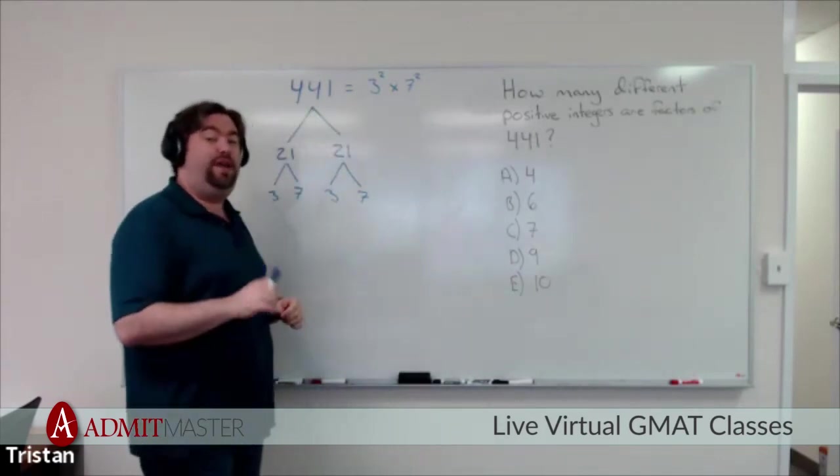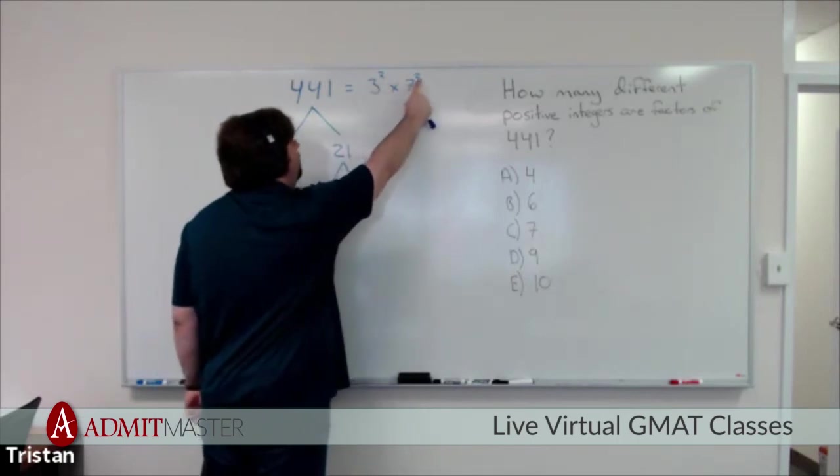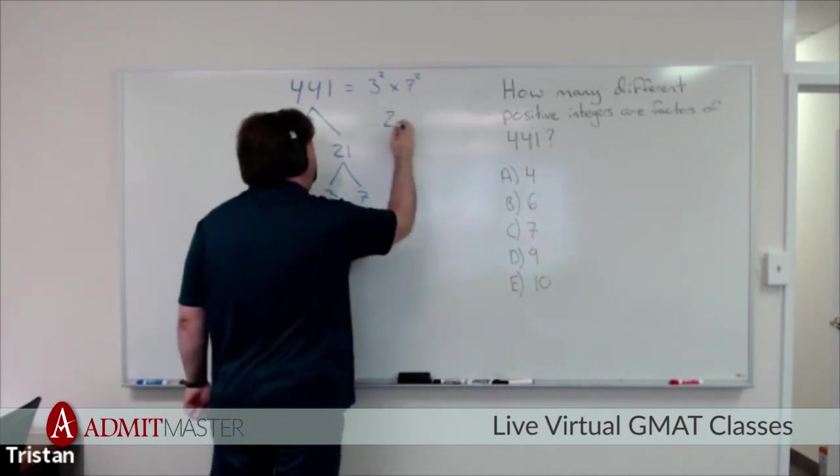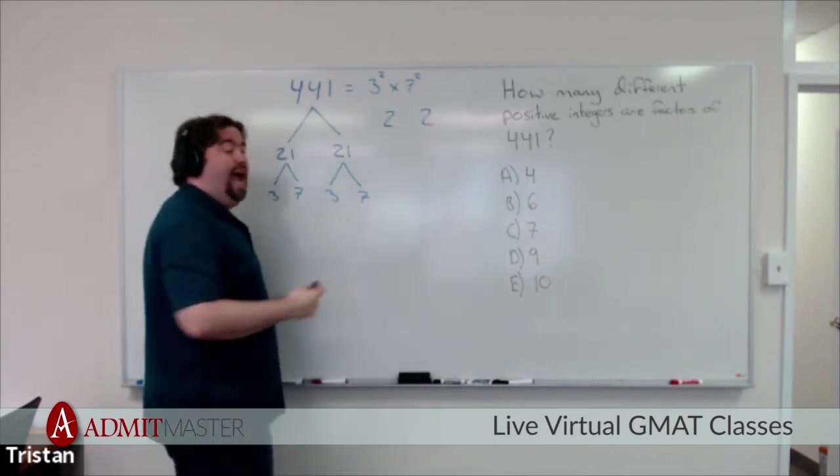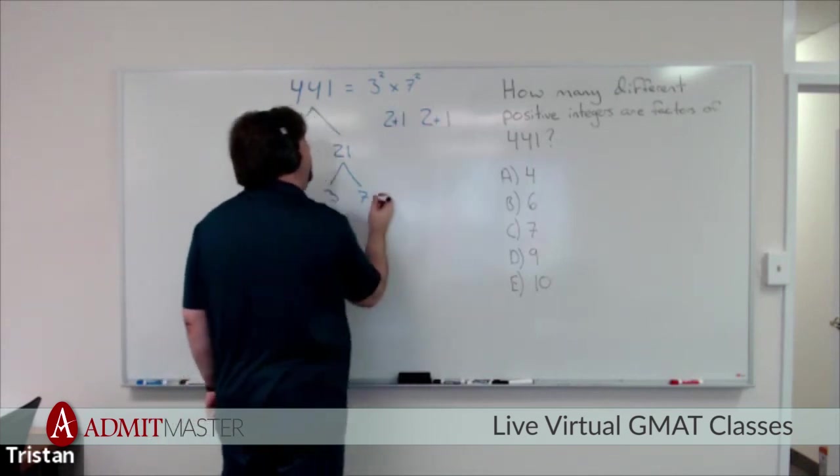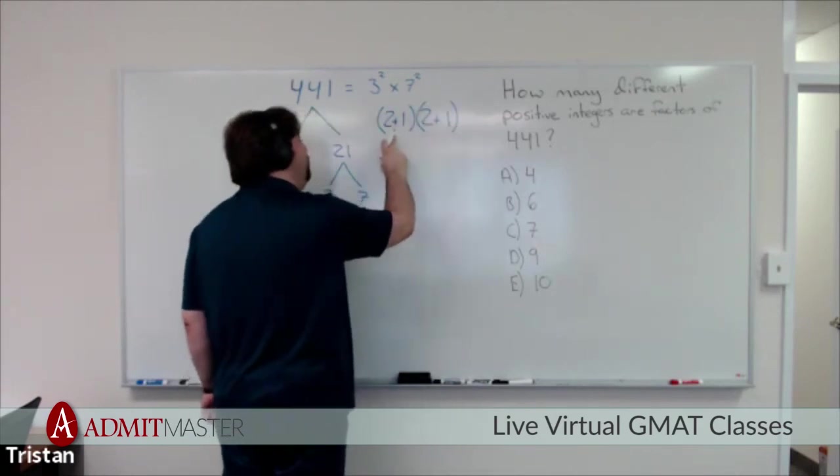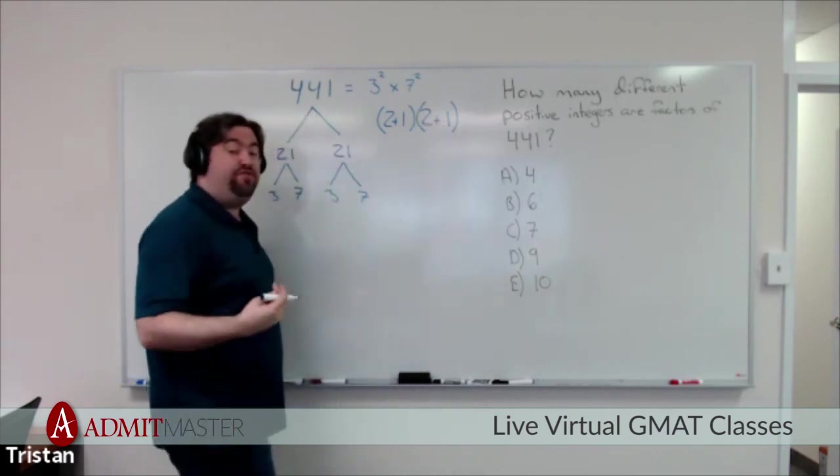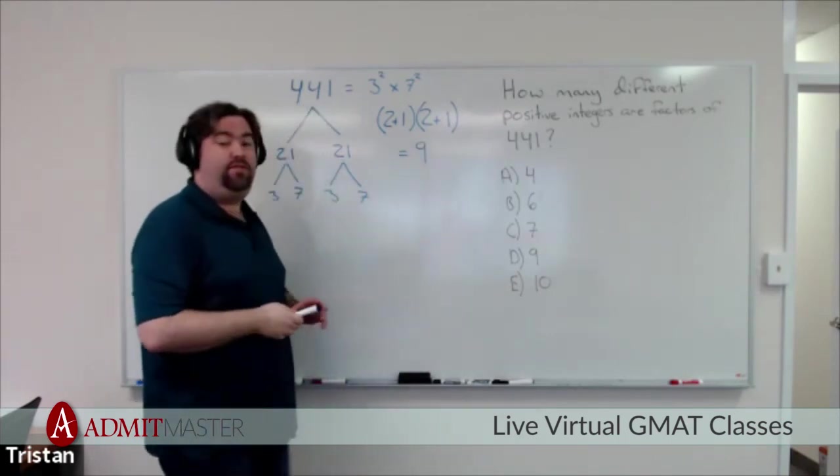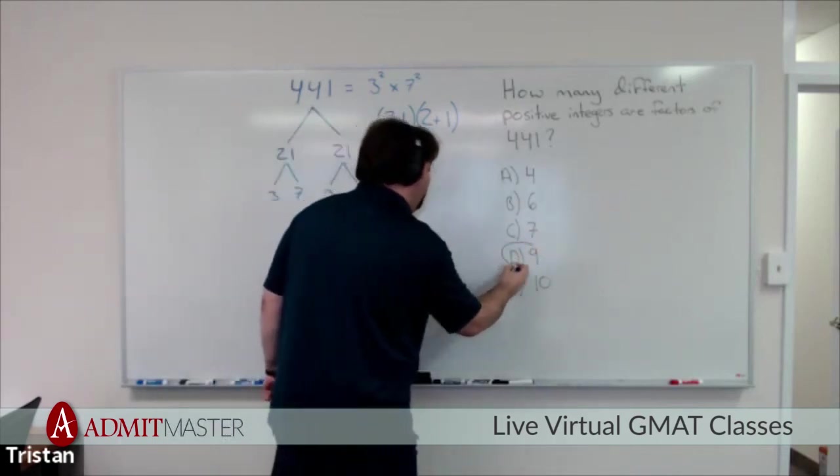And there's a very simple way that we can do this. All we have to do is take the powers of our prime factors here, our powers, which are 2 and 2. We then add 1 to each of our powers. So we get 2 plus 1 and 2 plus 1. And then we multiply them together. 2 plus 1 times 2 plus 1, or 3 times 3, which gives us 9. That is actually the correct answer for this question. There are 9 numbers that are factors of 441.